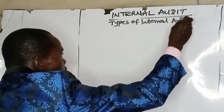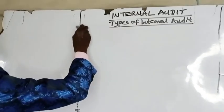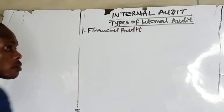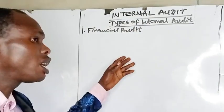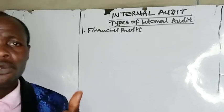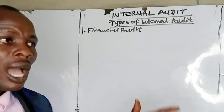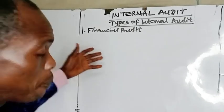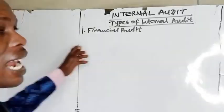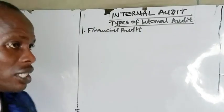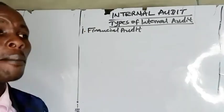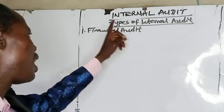Types of internal audits. Number one, we have financial audits. Financial audits involve the examination of the internal controls that are in place in the entity to minimize risk, identify weaknesses, and make recommendations for improvement in the internal control system.